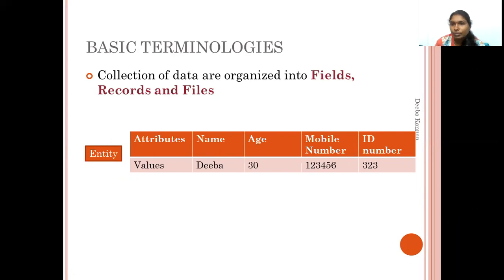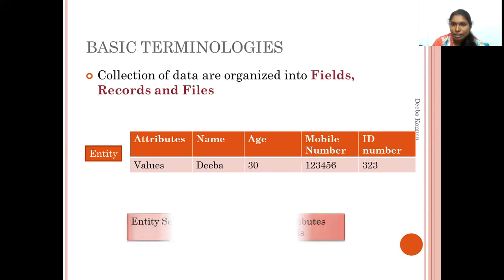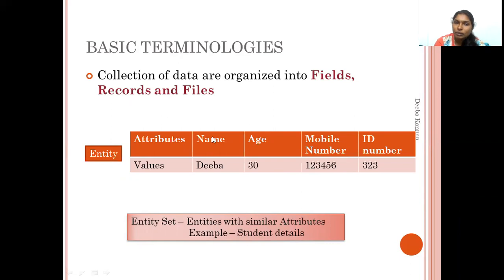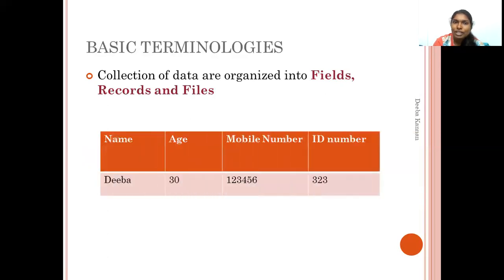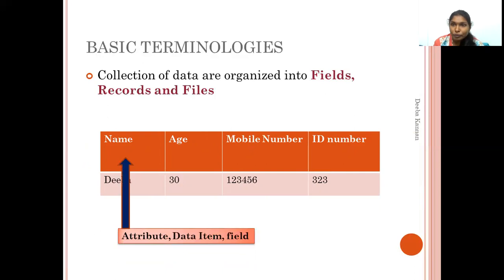This overall set is the entity. An entity set is a collection of entities with similar attributes — for example, collecting all student details or employee details with attributes like name, age, mobile number, and ID. The attribute, or data item, is a single field. So name, attribute, or data item — these all refer to a single field.